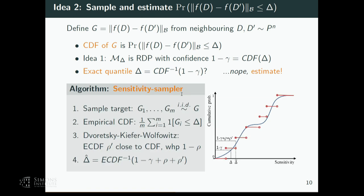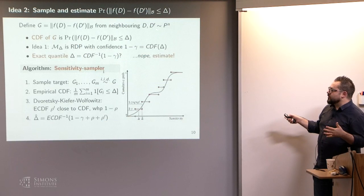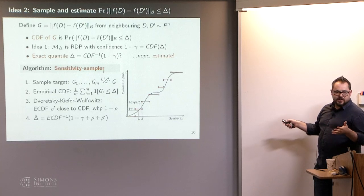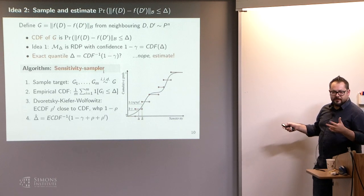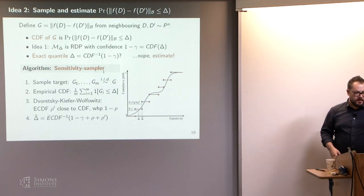What we'll instead do is estimate quantiles instead of calculating them exactly. Here's the algorithm: we want to sample IID from the sensitivity random variable — some number of samples, thousands or tens of thousands or hundreds of thousands. As long as it's easy to sample from your distribution, and you can evaluate your function, and you can calculate a norm — if you can do those three things, you can draw observations from the sensitivity random variable. We form the empirical CDF and invoke the DKW inequality — a finite-sample uniform convergence result.